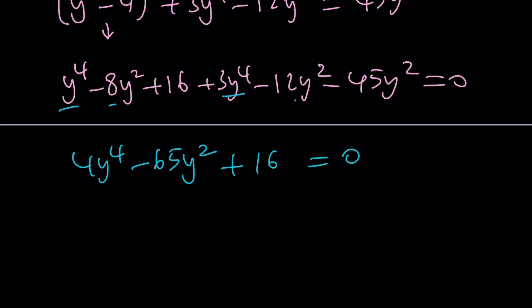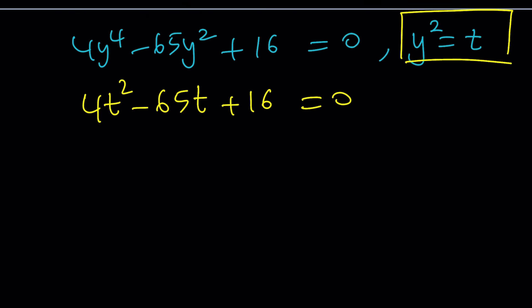This is a bi-quadratic equation, which means by way of substitution, you can actually turn this into a quadratic equation. Let's go ahead and set y squared equal to t. This gives us 4t squared minus 65t plus 16 is equal to 0. So you can do a couple different ways. For example, you can use the quadratic formula or notice that 65 is 64 plus 1. Is that significant? Absolutely. Take a look.